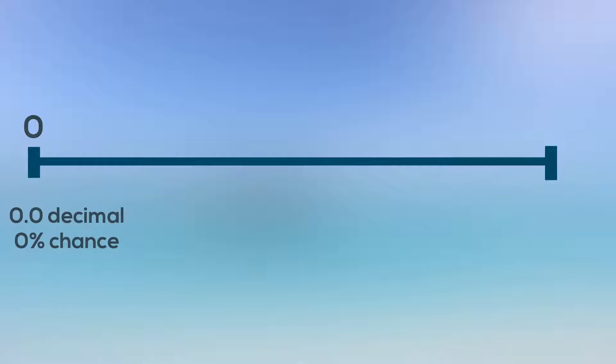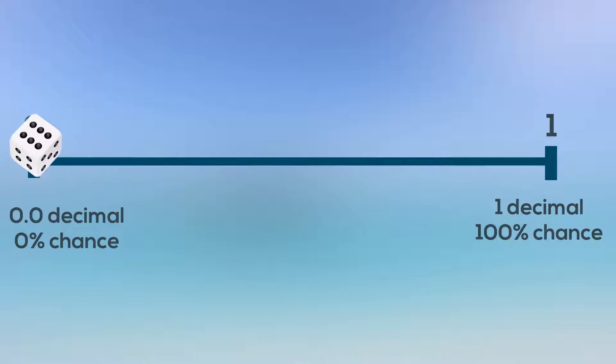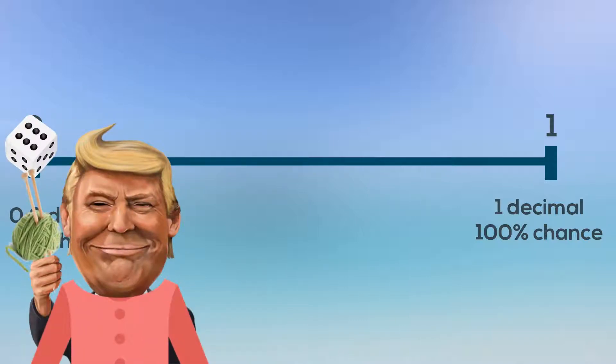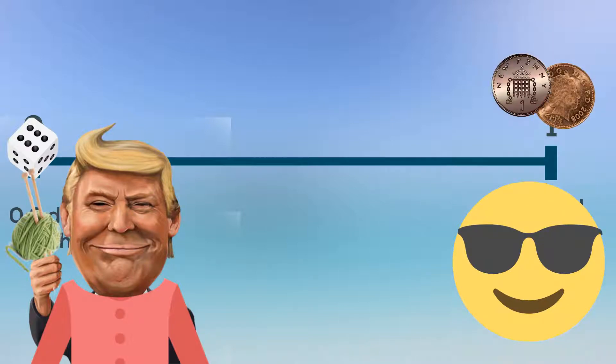So how do we start to understand these probabilities? The tool we use is called a probability scale. It's just a line that goes from impossible to certain. We write a 0 at the impossible end for a 0% chance of that thing happening, and a 1 at the other end for a certainty. At the impossible end are things that can never happen, like rolling a die and it landing on a corner, or Donald Trump taking up knitting. At the certain end you have things which will definitely happen, like the sun rising tomorrow or a coin flip landing on one of its two sides.